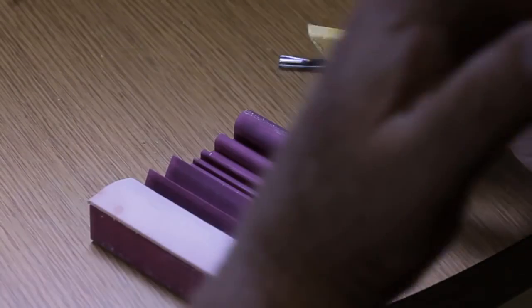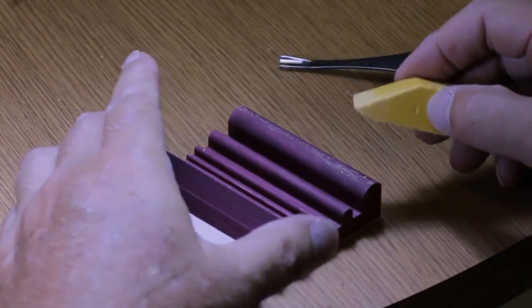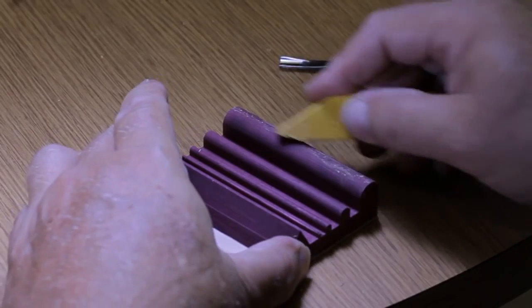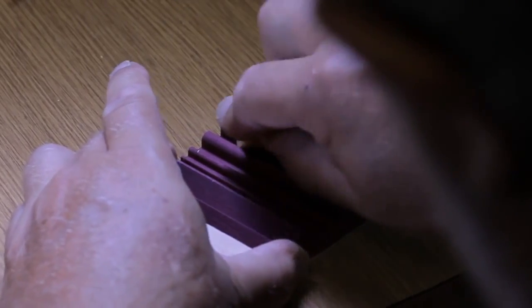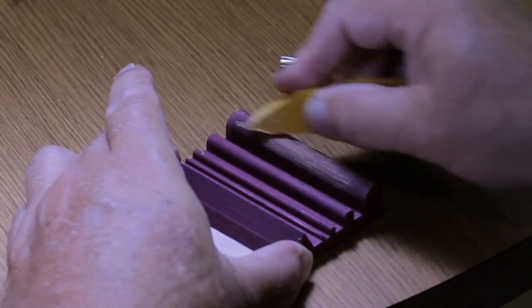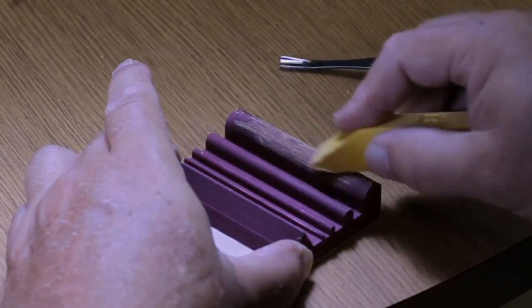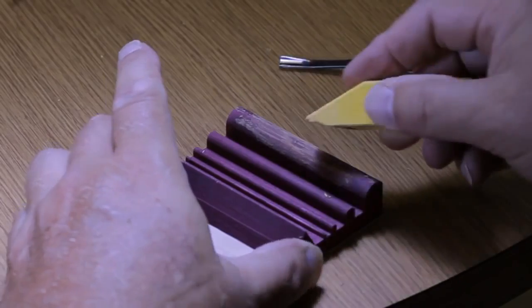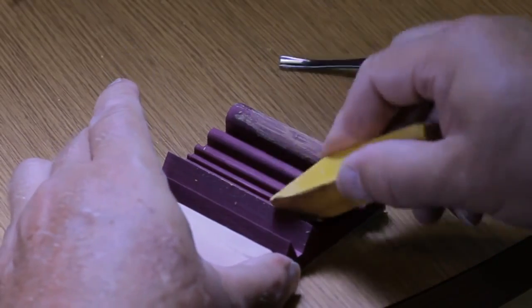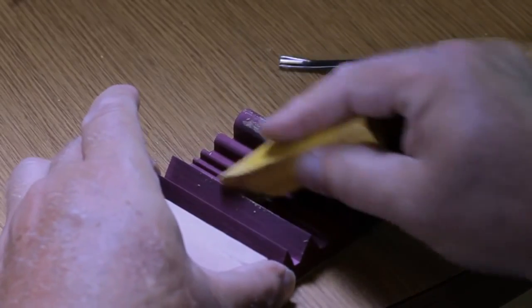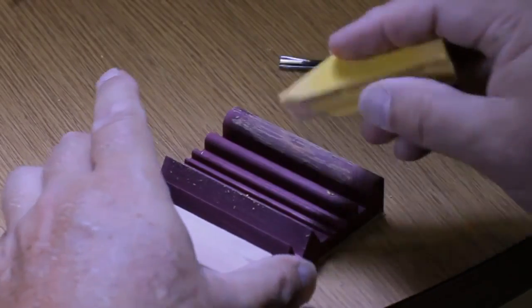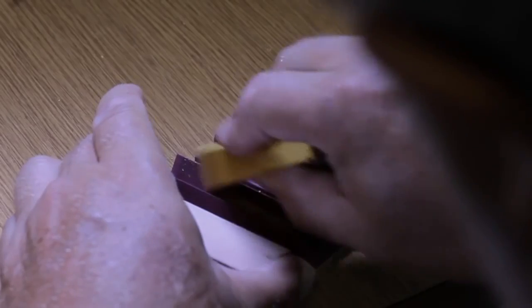When you flip it over, once you have used the block for some time, you're going to have compound on it. Since this is a new block, I want to apply some compound to the gouge. I'm also going to apply some compound here to the V-cut tool which I will be showing and demonstrating in just a few minutes.